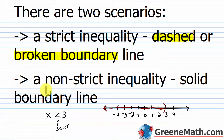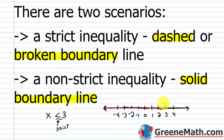The next scenario is a non-strict inequality, for which you're going to have a solid boundary line. The reason is that it's included. If I had x is less than or equal to 3, I'd use a bracket instead of a parenthesis, because 3 is included. That's what we're doing with the solid boundary line — that line is included as part of the solution.